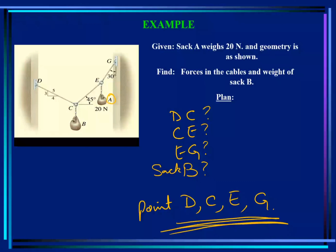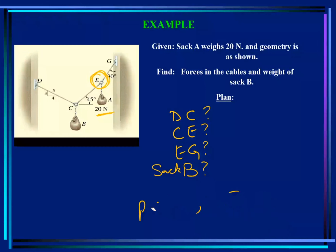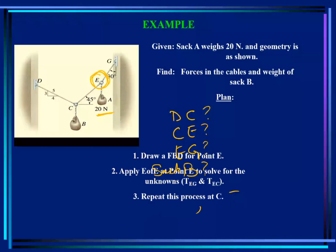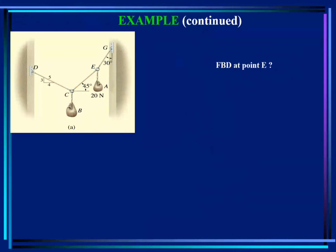Let's look at point E. At point E, we have the 20 newtons given, so we have one known and two unknowns. Therefore, our starting point for analysis should be point E.